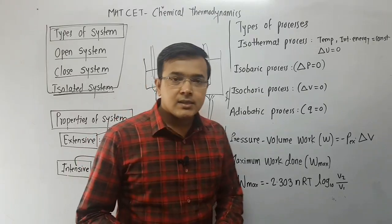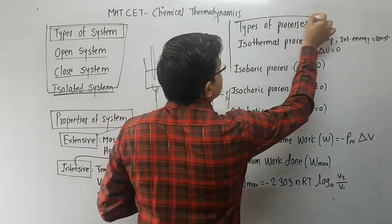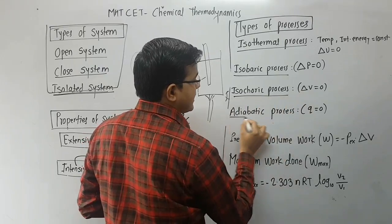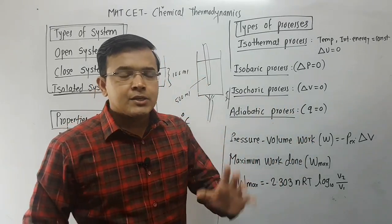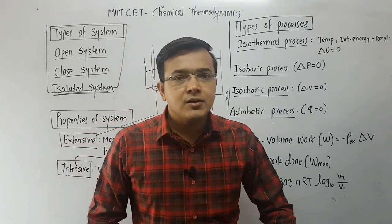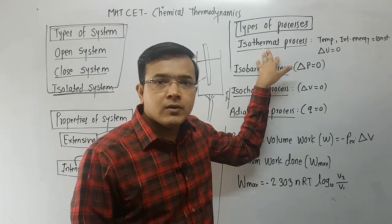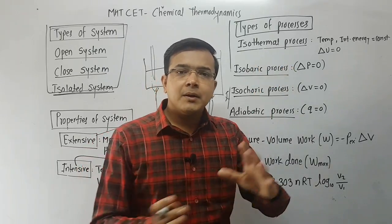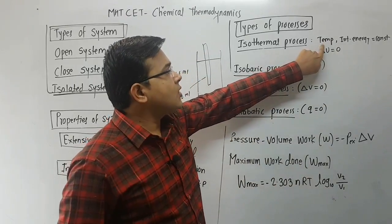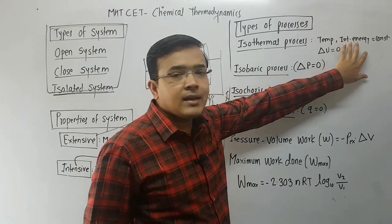These are the examples of extensive and intensive properties. Now the next topic from this chapter is types of processes: isothermal process, isobaric process, isochoric process, and adiabatic process. In the isothermal process, the temperature of the system remains constant throughout the transformation. When the temperature is constant, obviously the internal energy is also constant.